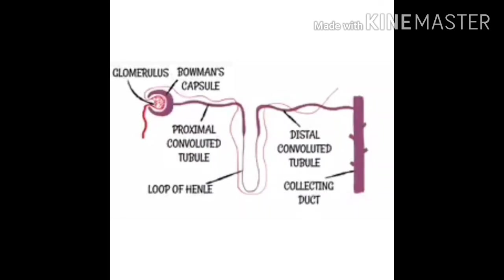Next is the collecting duct, where all material from the tubule enters. From there it travels down until it exits the kidney through the ureter, and can then exit the body.